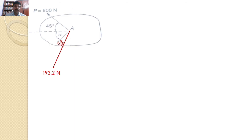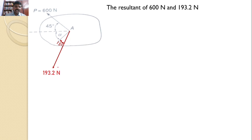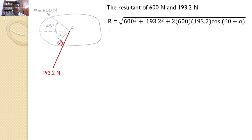Now the diagram has only two forces acting on the body: 600 newtons and 139.2 newtons. The 600 newton force makes an angle of 45 degrees, and the 139.2 newton force makes an angle of alpha plus 15 degrees with the horizontal. We can find the resultant of these two forces. The angle between these two forces is 45 + (alpha + 15) = 60 + alpha.